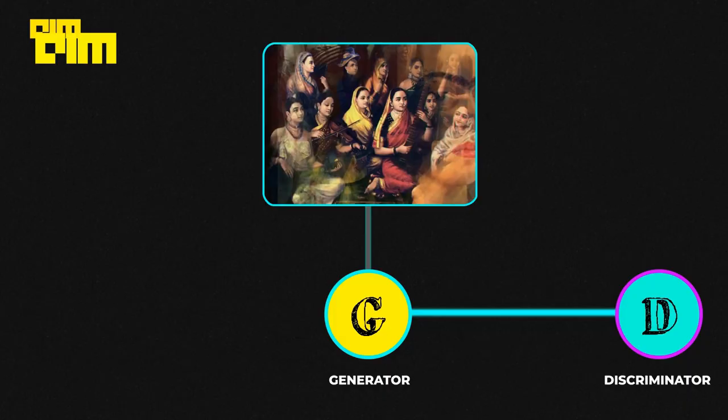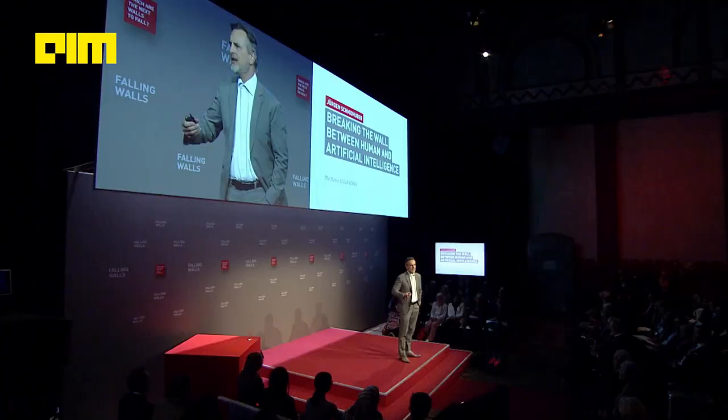Jürgen Schmidhuber, who is one of the key people behind LSTMs, has been responsible for many other innovations in AI. From GANs to reinforcement learning to meta-learning, there is hardly a domain that he hasn't contributed to. Today, his ideas power billions of devices across the world and are used by companies like Apple, Microsoft, Google, and Amazon.